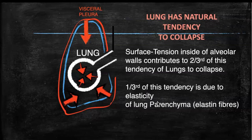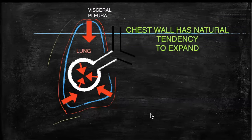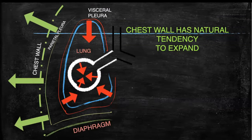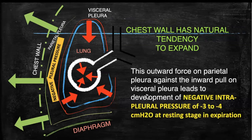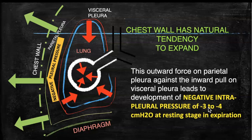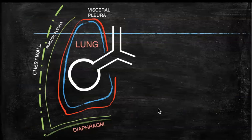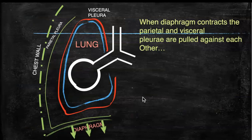One-third of this tendency is because of the elasticity of the lung parenchyma due to elastic fibers. The chest wall has a natural tendency to expand outwardly, and that is why the outward pulling force of the parietal pleura and the collapsing force over the visceral pleura creates a negative intrapleural pressure of minus 3 to minus 4 centimeters of water at resting stage during expiration.